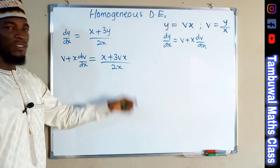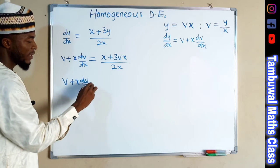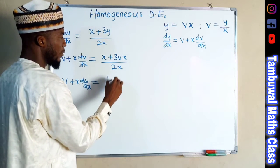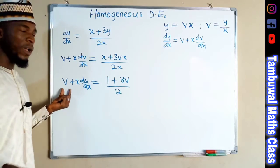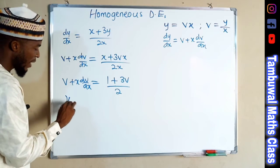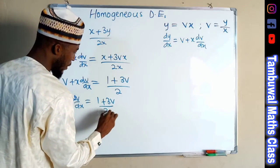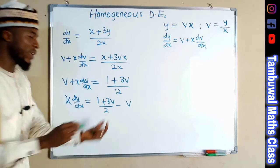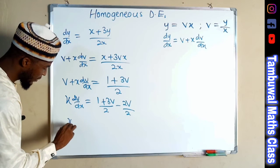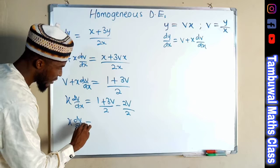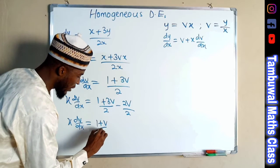Each term contains x, so we divide each term by x. On the left we have v plus x dv over dx. On the right, x over x is 1, and 3vx over 2x is 3v over 2. We subtract v from both sides: x dv over dx equals 1 plus 3v over 2 minus v. Writing v as 2v over 2 gives a common denominator, so x dv over dx equals 1 plus v all over 2.